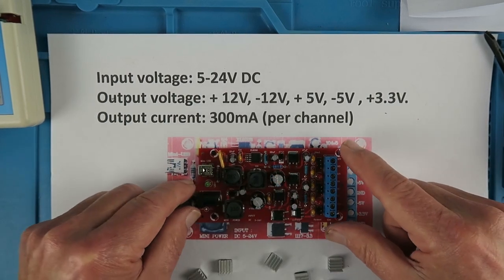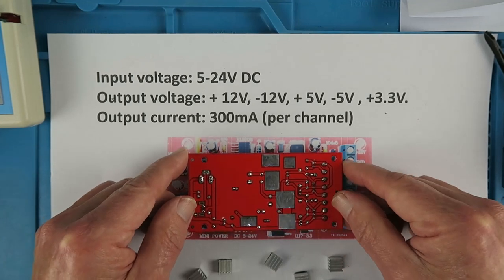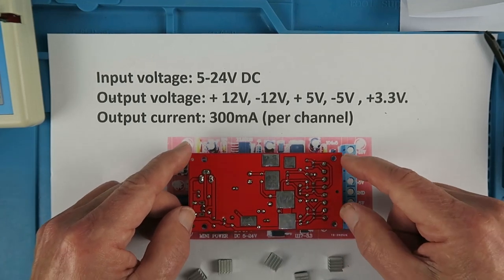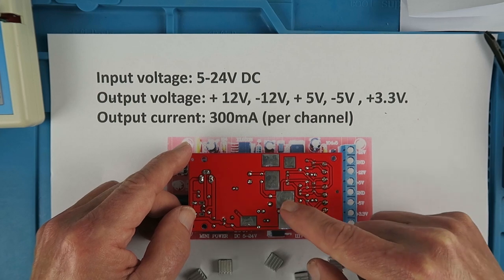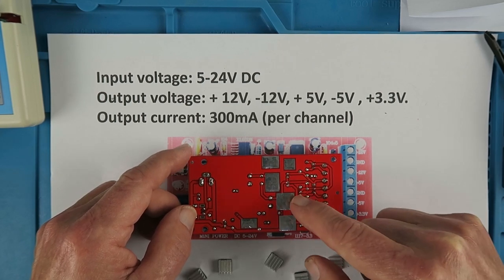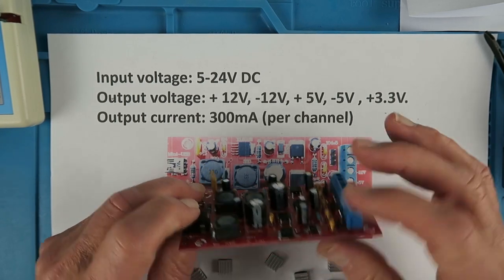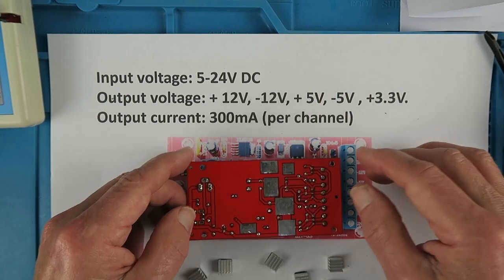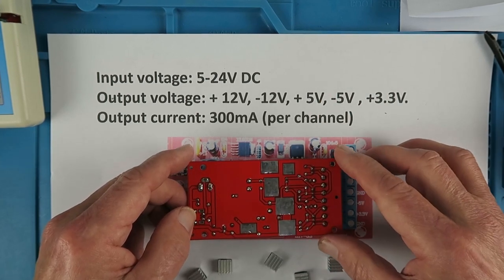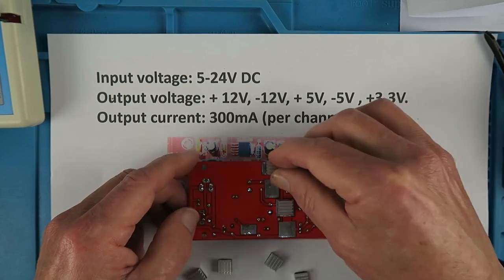Now contrary to many photos that I've seen I believe the heat sinks should be placed on the back. In the design of the board they went to a lot of trouble to put the plated through holes that when the extra solder is applied will provide a good path from the metal tab of each of the devices to the back side to dissipate the heat. For me it makes much more sense to put the heat sinks on the back.